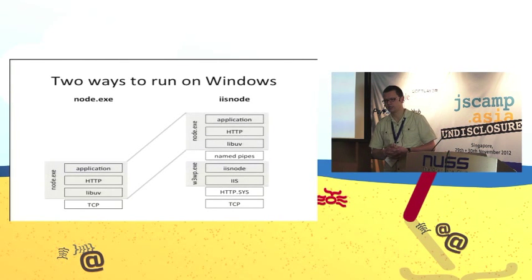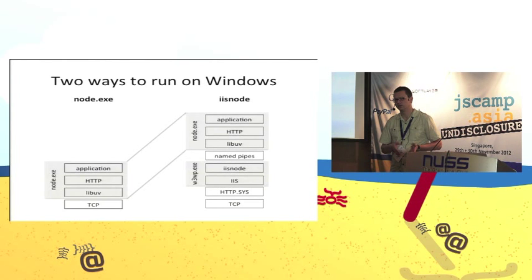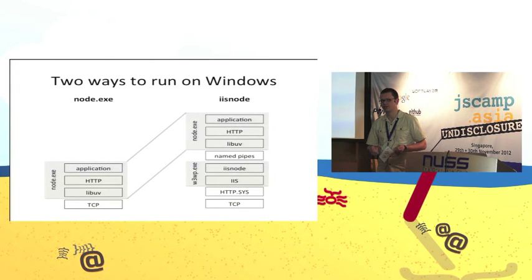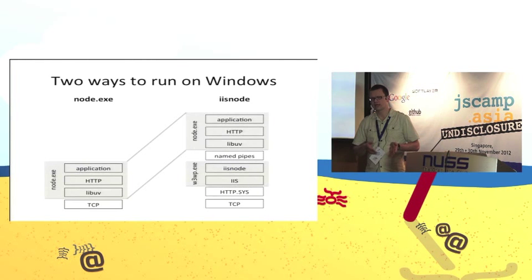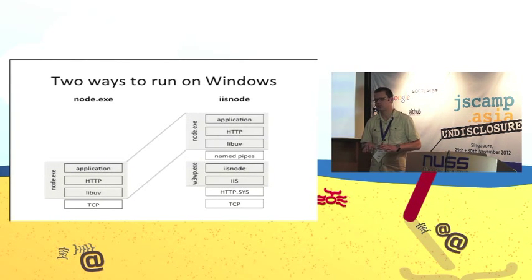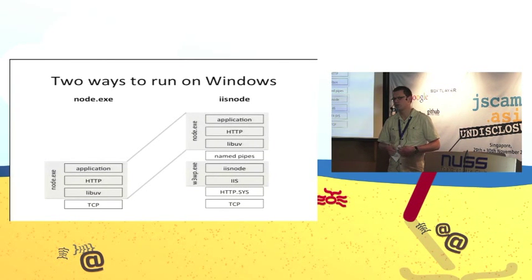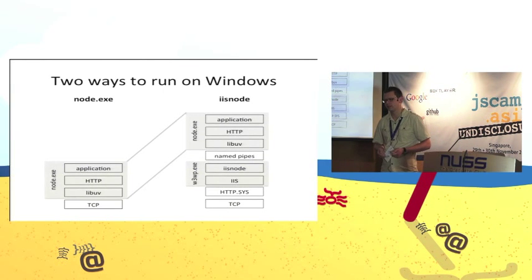Another benefit of IIS Node is related to scale-out. Since every Node process is single-threaded, a single Node process can only saturate up to one CPU core. On a typical multi-core server you need multiple Node.exe processes. In self-hosted Node you use the Cluster module, which requires you to write extra code — spinning up child processes with one master managing them. In IIS Node that functionality is built-in. You don't have to write any extra code — IIS Node knows how to create multiple Node.exe processes to fully saturate the CPU on a multi-core machine.